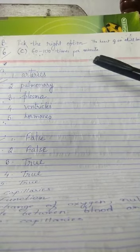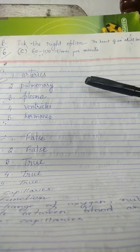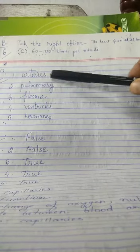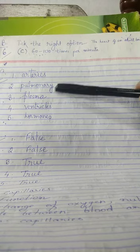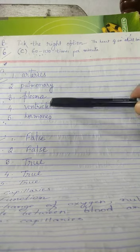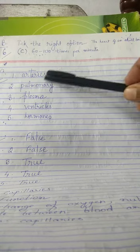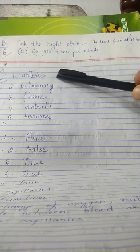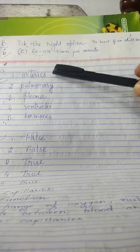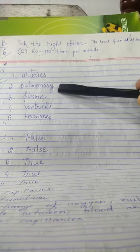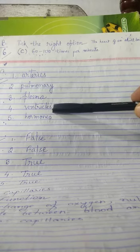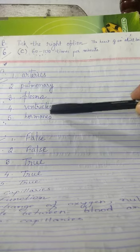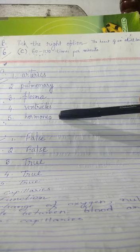Now move to C: fill in the blanks. So these are the answers of the questions. First one is arteries, second is pulmonary, third is plasma, fourth is ventricles, fifth is hormones.